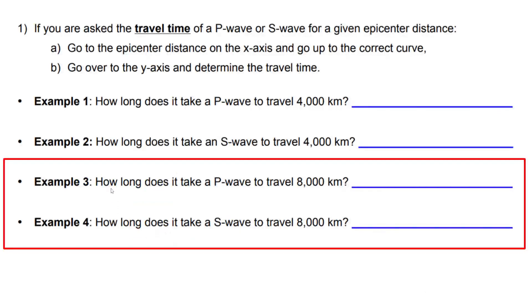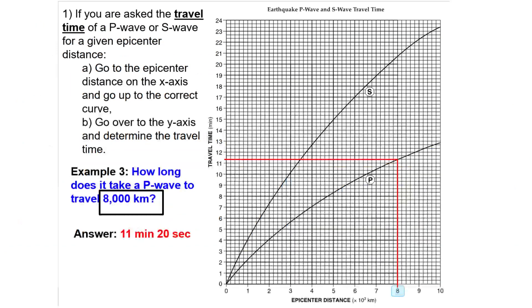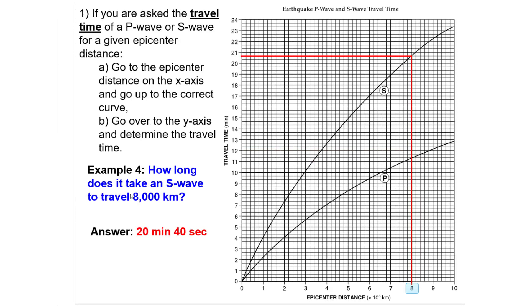Now try examples 3 and 4. Example 3: how long does it take a P wave to travel 8,000 kilometers? Starting at 8 on the x-axis, go up to the P wave curve, then left — it takes 11 minutes and 20 seconds. Example 4: how long does it take an S wave to travel 8,000 kilometers? Starting at 8, go up to the S wave curve, then left — it takes 20 minutes and 40 seconds.